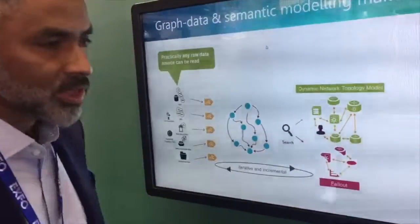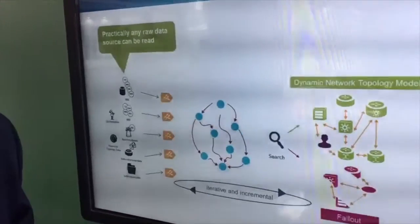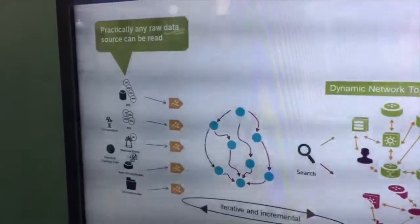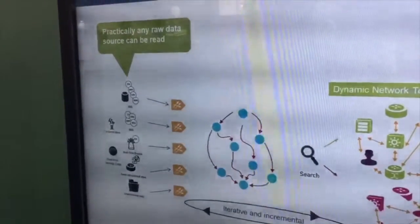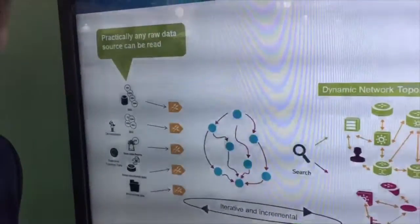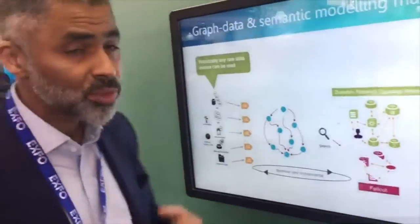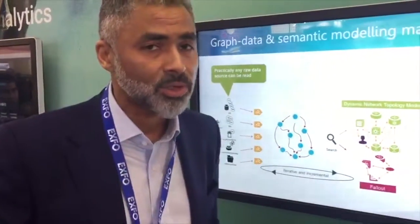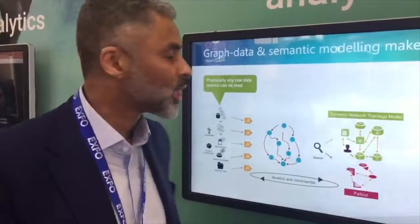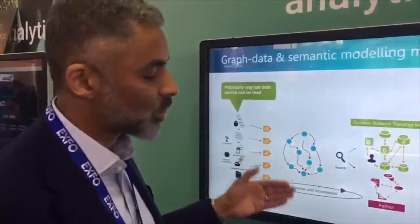Because a graph data store — the ones that we now use at Ecto — doesn't have a schema, the advantage of that is you can load up practically any data source from the network systems. And there will be lots of network systems that describe the network, so you need to be fast with that. You'll be able to load up those sources very quickly into the graph database.